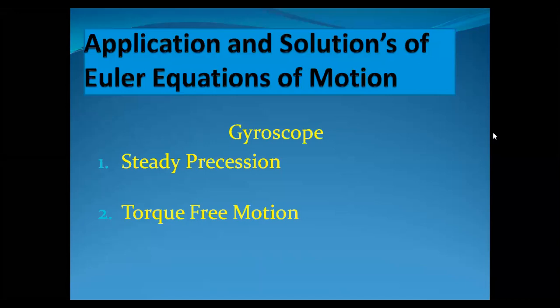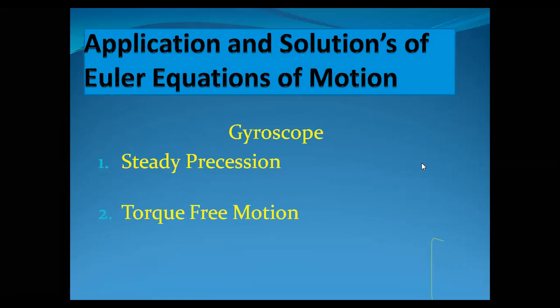From the application and solution point of view, we will be taking up the motion of the gyroscope, or what we call gyroscopic motion. So the application of the kinetics of rigid bodies in three dimensions is the gyroscope, and the solutions of the Euler equations of motion, or gyroscopic motion, are in the form of what we call steady precession and torque-free motion.